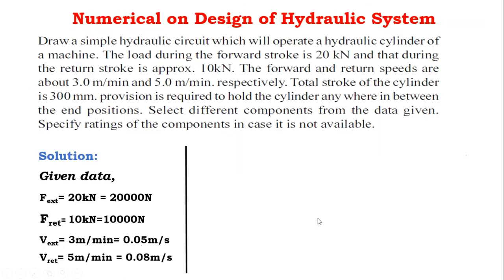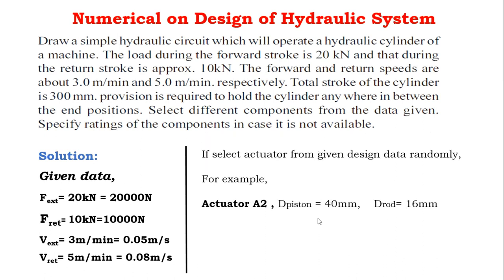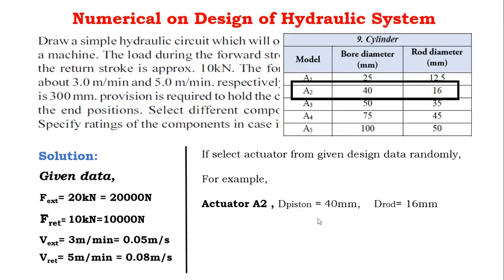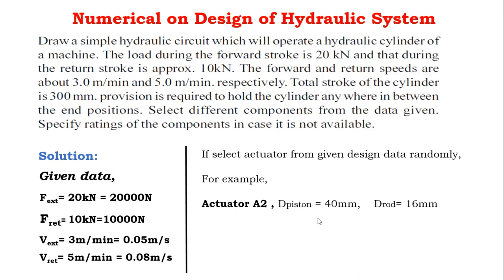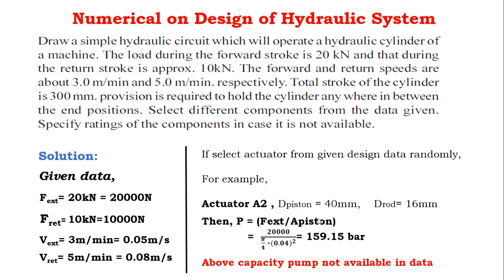If we randomly select actuator A2 from the given data — having piston diameter equal to 40 mm and rod diameter equal to 16 mm — and calculate the pressure built into the circuit, we get pressure equal to force of extension upon area of piston, which gives 159.15 bar.